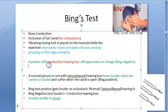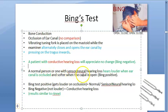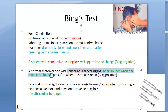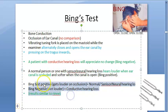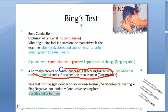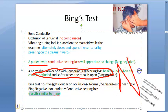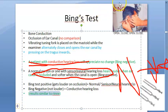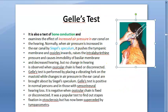In a normal person, there will be a difference when the canal is alternately opened and closed. Even with sensorineural hearing loss, there is a difference — the patient hears louder when the ear canal is occluded. This result is similar to Rinne's test: normal hearing or sensorineural hearing loss gives a positive Bing's test, while conductive hearing loss gives a negative Bing's test — the patient cannot appreciate any change.